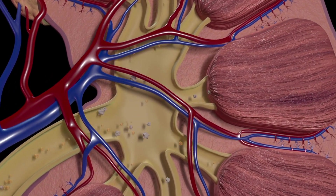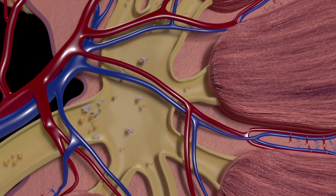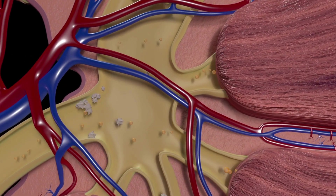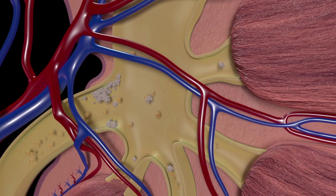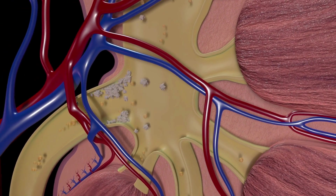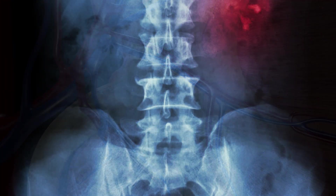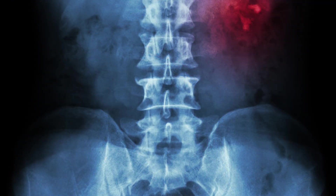Uric acid is found in your bloodstream and urine. It's a type of compound called an organic acid, which means it contains carbon, hydrogen and oxygen.